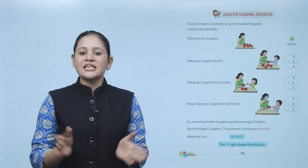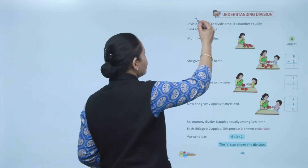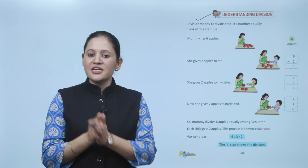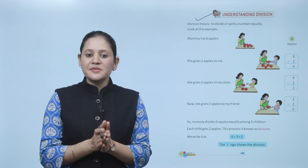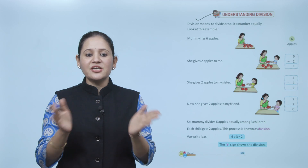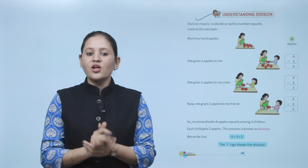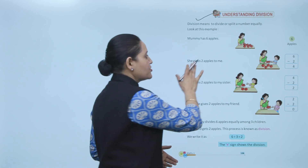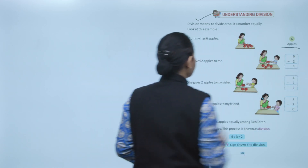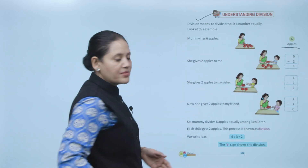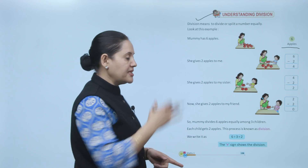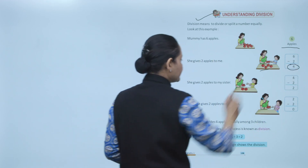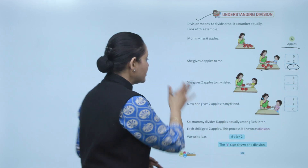Next, understanding division. Division means to divide or split a number equally — kisi bhi number ko split karna hai, divide equally karna — that is called division. Look at this example: mummy has six apples. Mama ke paas total chhe apples. She gave two apples to me — do apple mujhe diye — means six minus two, so four apples left.